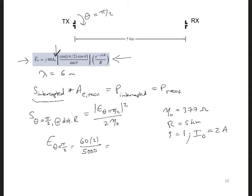And that's all equal to 0.024 volts per meter. And then S theta at pi over 2 at r is 0.024 squared over 2 times 377, which is 764 nanowatts per meter squared.